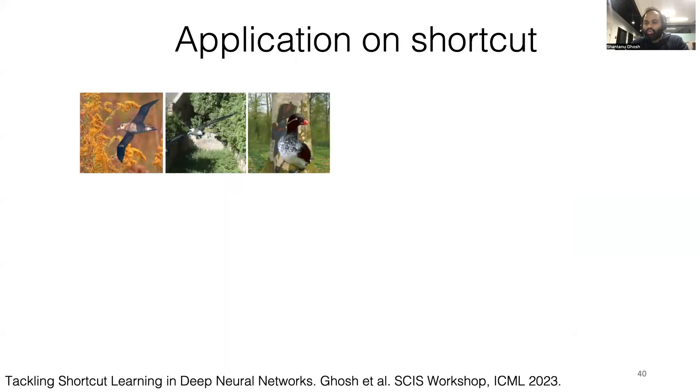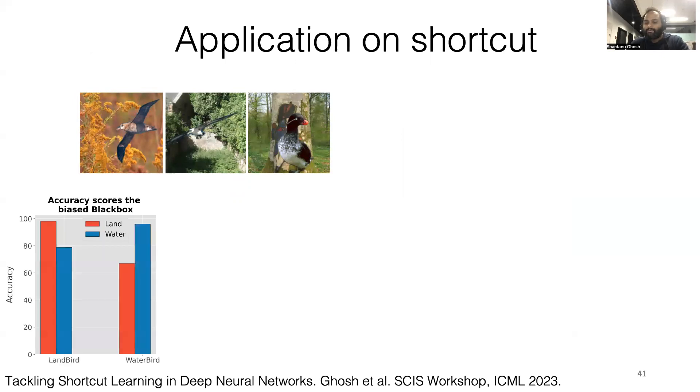Next, we leverage the water birds dataset and apply our method to eliminate the shortcut learning problem. First, we train a biased black box. We can see that the performance of the black box on water birds on water is greater than that of the water birds on land. This is because the black box uses the water shortcut to classify the water birds.